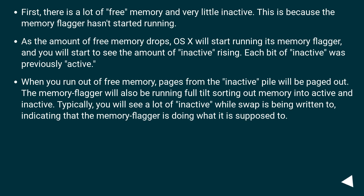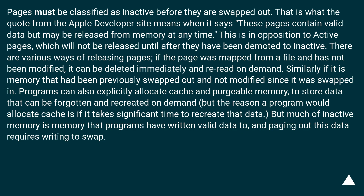When you run out of free memory, pages from the inactive pile will be paged out. The memory flagger will also be running full tilt, sorting memory into active and inactive. Typically, you will see a lot of inactive while swap is being written to, indicating that the memory flagger is doing what it is supposed to. Pages must be classified as inactive before they are swapped out — that is what the Apple developer site means when it says 'these pages contain valid data but may be released from memory at any time,' in opposition to active pages.